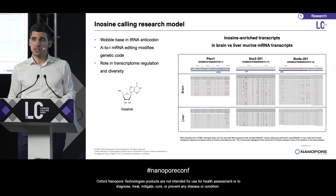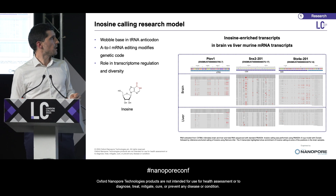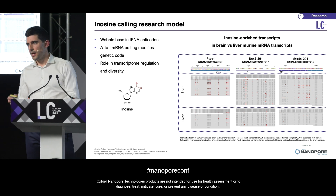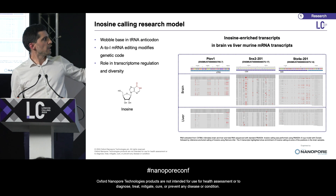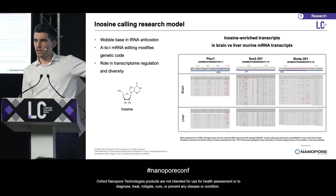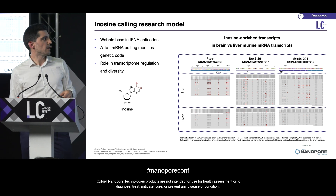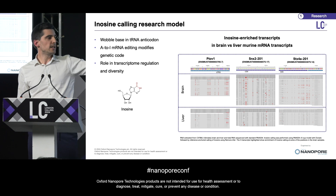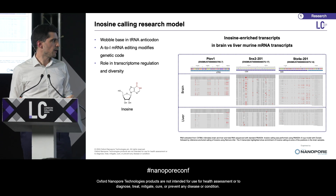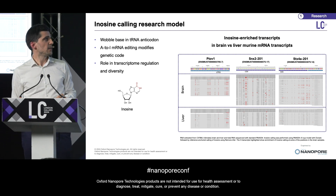Another modification we're still working on — not ready for release yet — is inosine. Inosine is a wobble base in the tRNA anticodon and some mRNAs, and it has a role in A-to-I RNA editing. We haven't fully validated it yet, but we've tested on brain versus liver samples, since brain is known to have higher levels of inosine than liver. We found really easily three transcripts showing elevated inosine editing in brain as opposed to liver. We're hoping to be in a position to release this model in the near future.